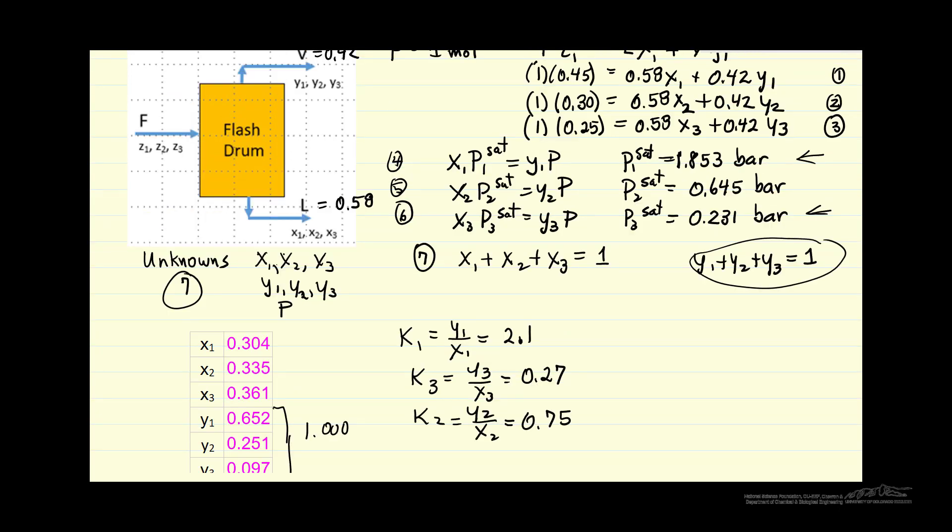So finally, let's show why this equation, sum of the vapor mole fraction, is not independent. And we'll do that by adding equations 1, 2, and 3 together.